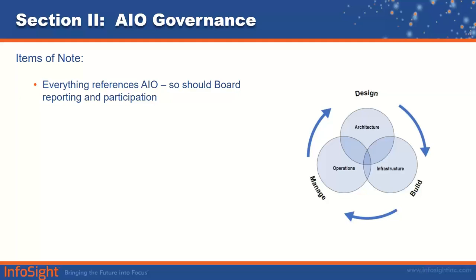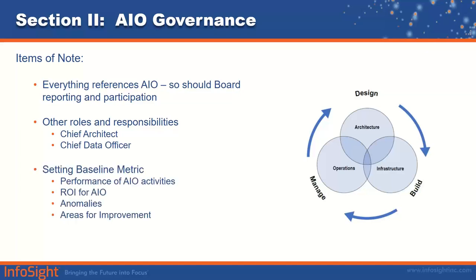Some items to note: everything in this booklet is AIO, so board reporting and participation needs to reflect AIO references. There are a few new roles defined — those of the chief architect, responsible for the architecture, and the chief data architect, responsible for all of the institution's data. Chances are someone in your institution is already informally wearing those hats. Depending on the complexity and risk in your institution, you may need to make those titles official. Also, setting baseline metrics for all areas of AIO — such as performance of AIO activities, return on investment, anomalies, and areas for improvement — is included.